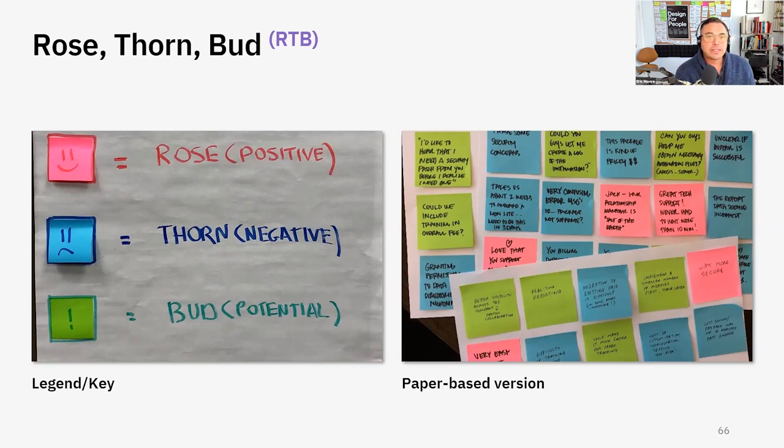Last is the bud. This is the idea that there's a potential about to bloom — another rose. The interesting thing about the bud is it can also be a thorn, and a thorn can be a bud. You can call them a thud or a born, but they're sort of interchangeable because you can see an opportunity inside of a challenge.